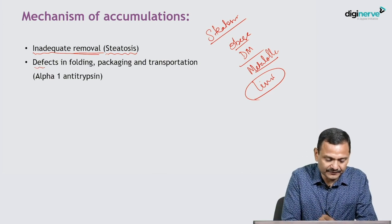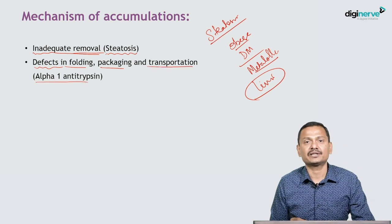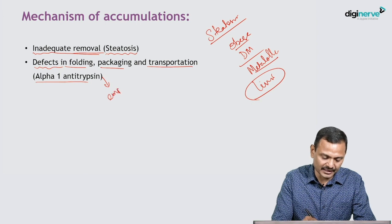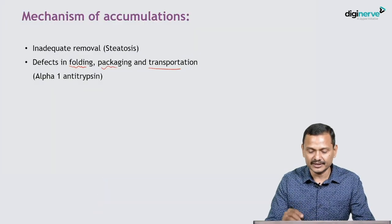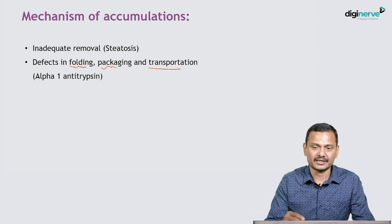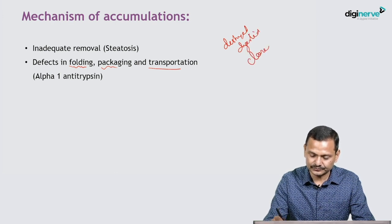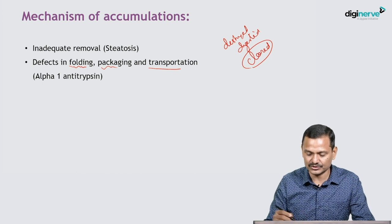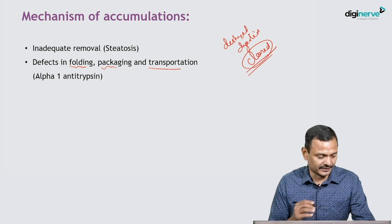The next mechanism is defect in folding, packaging, and transportation. For example, alpha-1 antitrypsin deficiency, which is commonly associated with a disease called emphysema. If there is a defect in folding, packaging, or transportation, these substances can neither reach the subcellular structure nor be destroyed or digested. If they are not digested, they cannot be cleared — mostly cleared by proteasomes — so they will be accumulated in the cell.